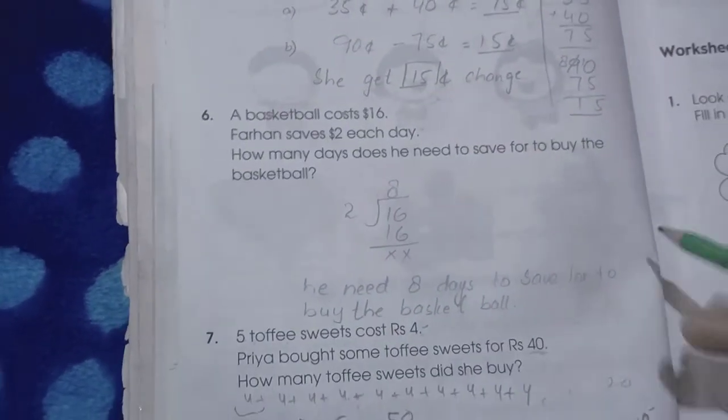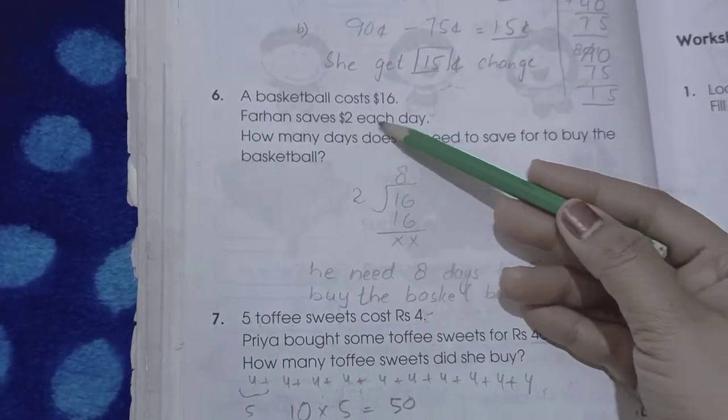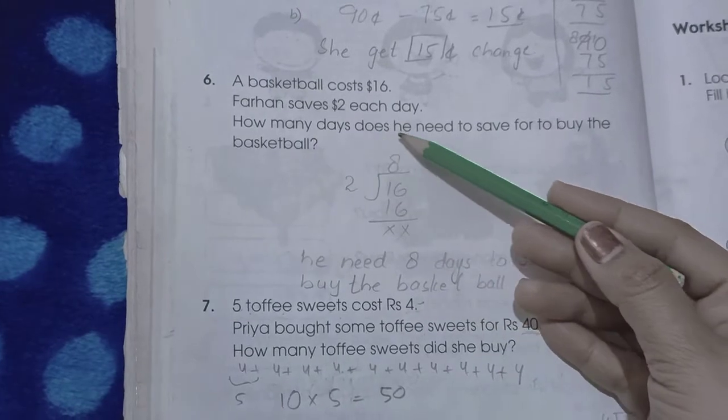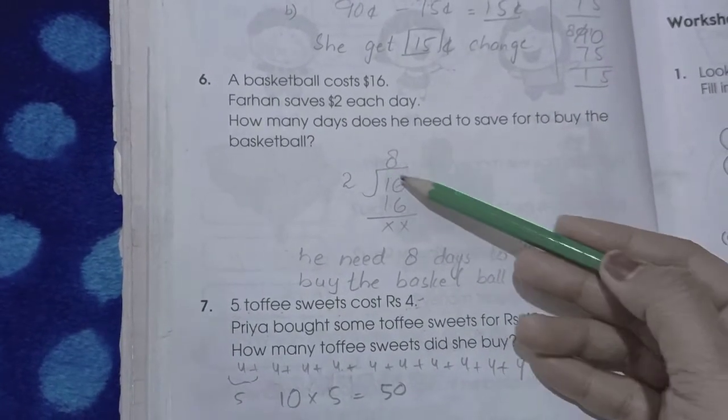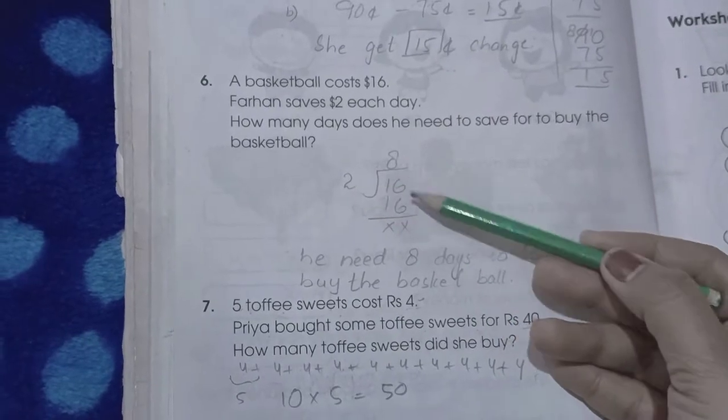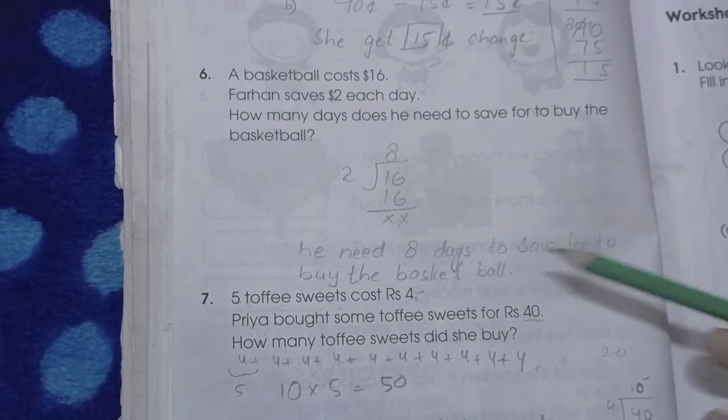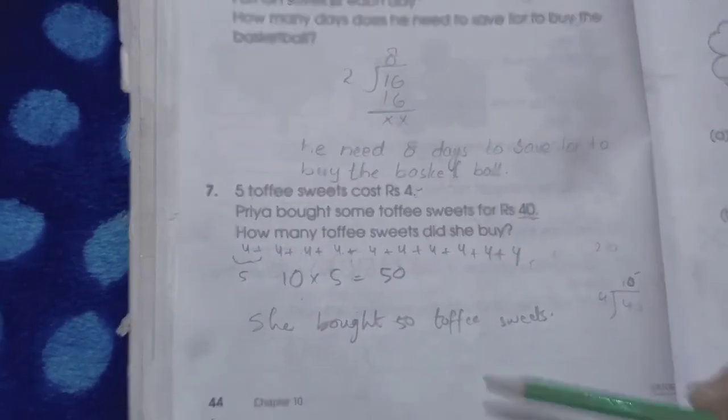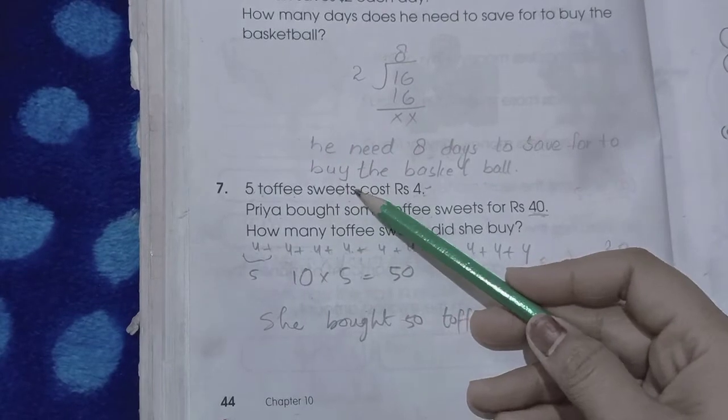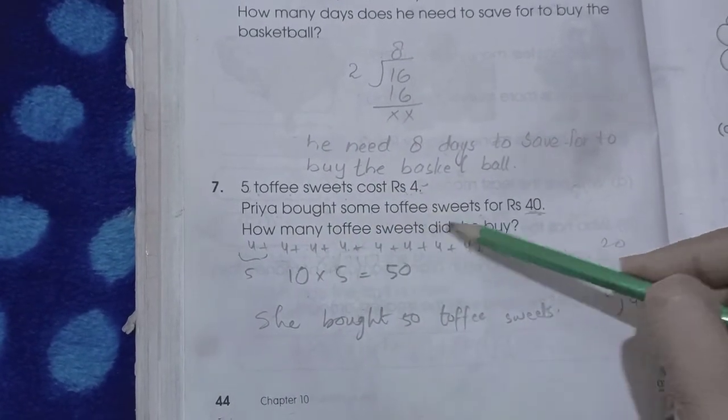A basketball costs $16. Farhan saves $2 each day. How many days does he need to save to buy the basketball? To reach 16, he needs 8 days to save for the basketball.